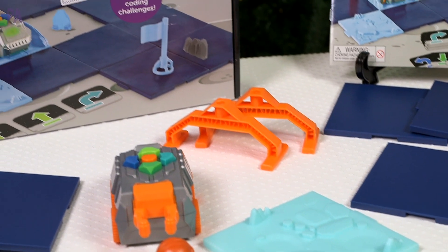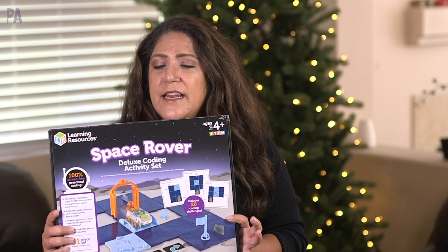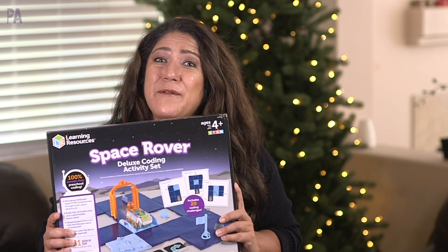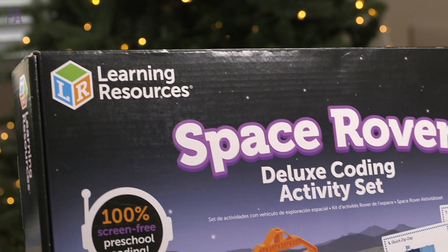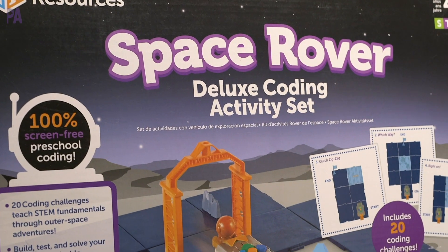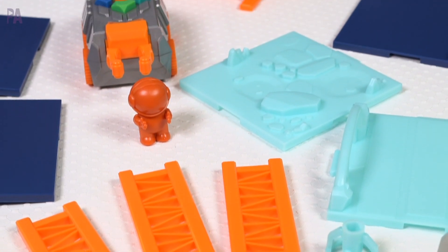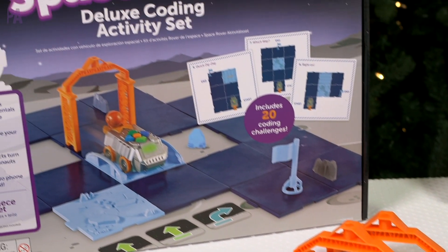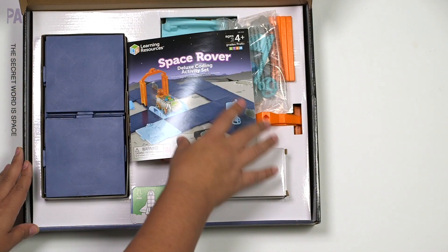STEM gifts are amazing. This is from Learning Resources. It's called Space Rover and it's a deluxe coding discovery set. Definitely going to be on a wish list this year. Learning Resources Space Rover set is for ages four and up. It's a deluxe coding activity set. I love these things. There's 51 pieces in here and it's actually screen free coding which is unique because a lot of times coding comes with an app or something like that. This one is completely screen free.